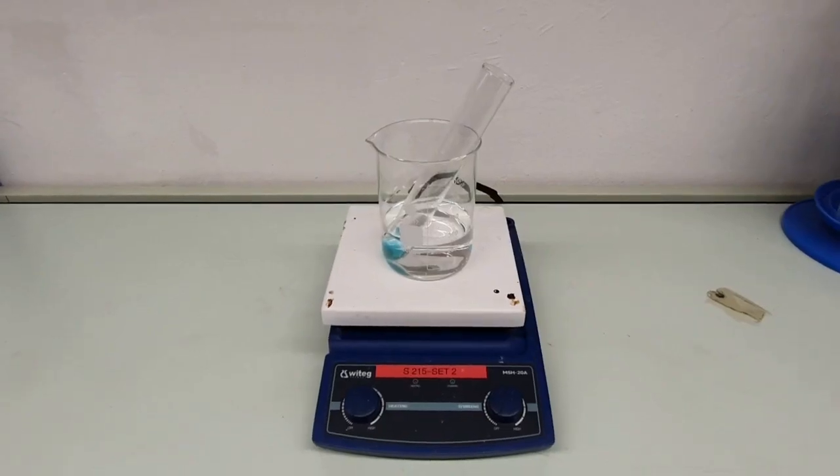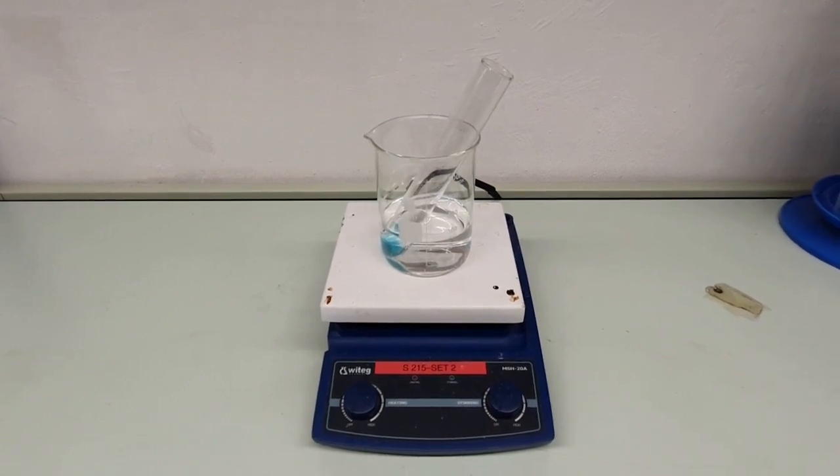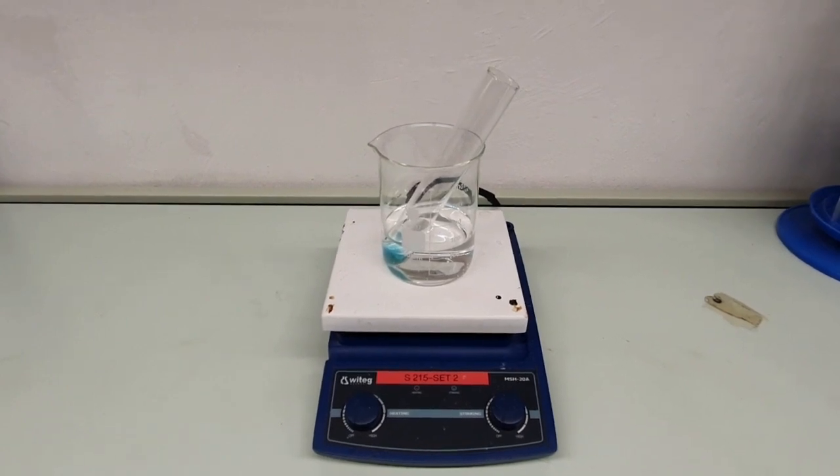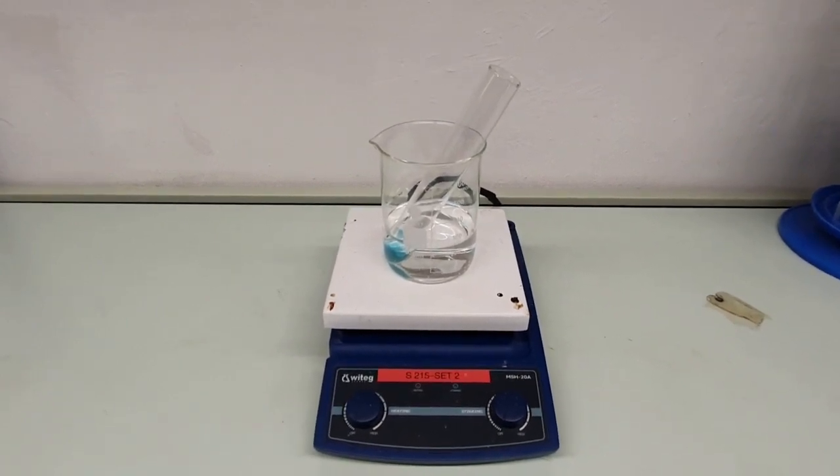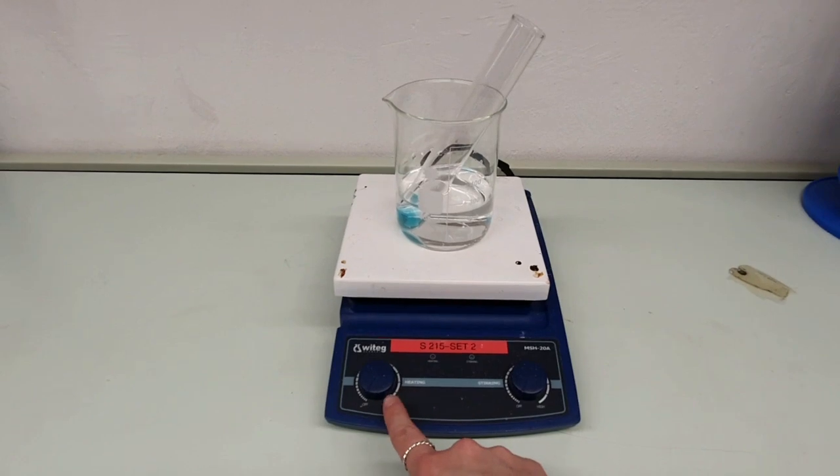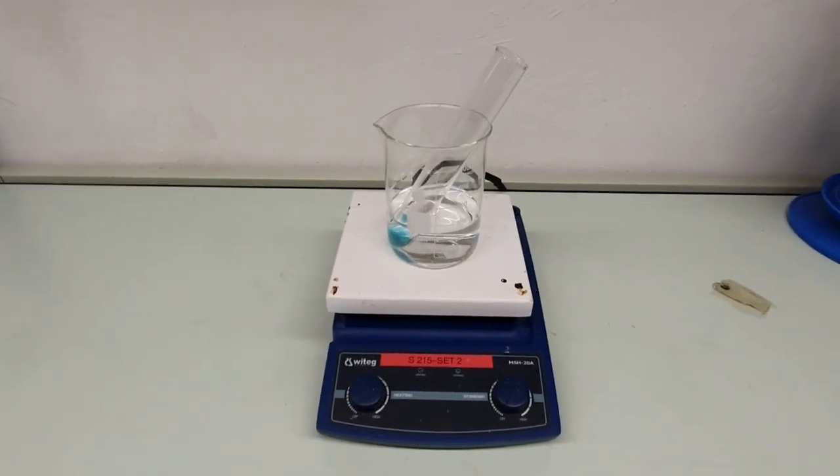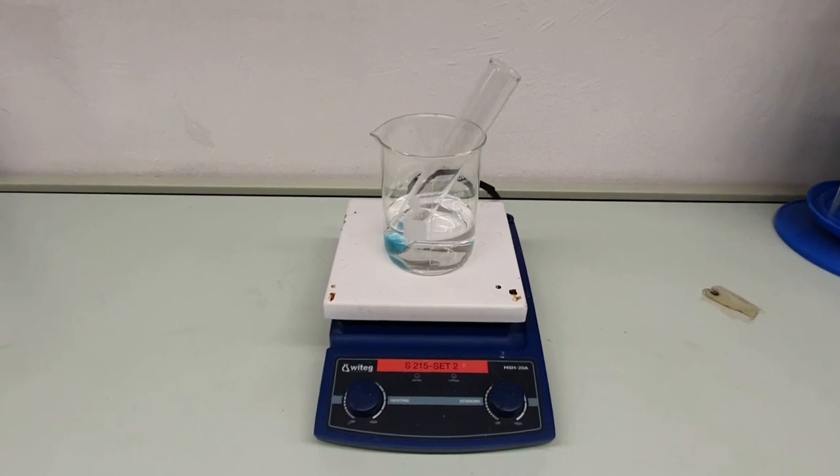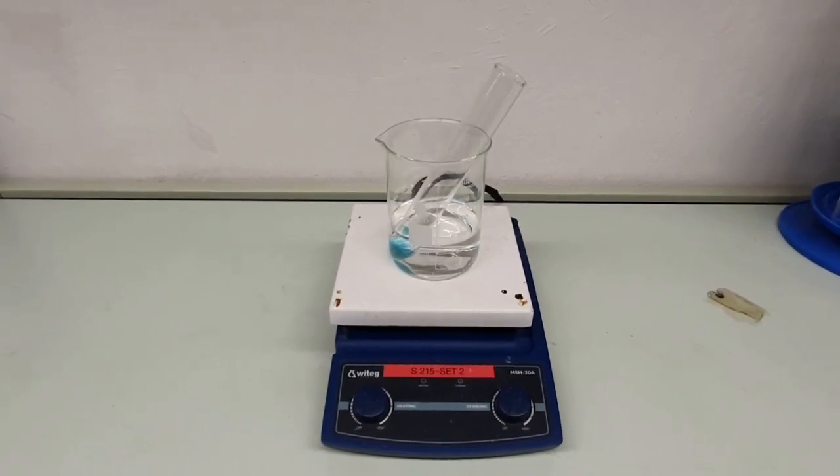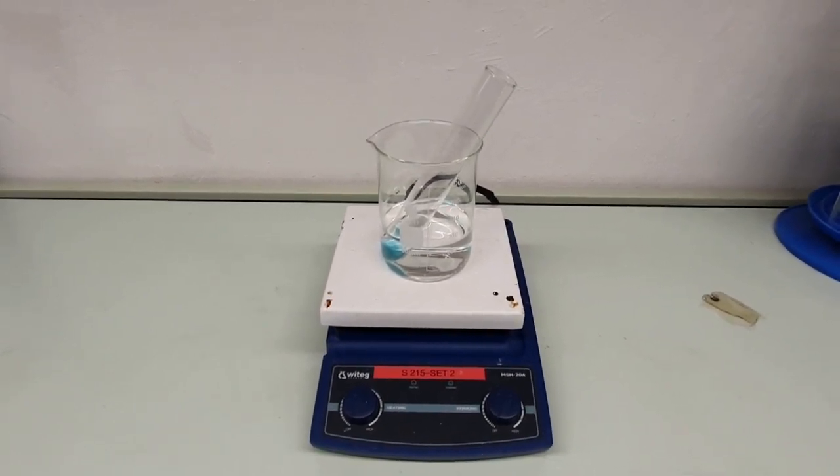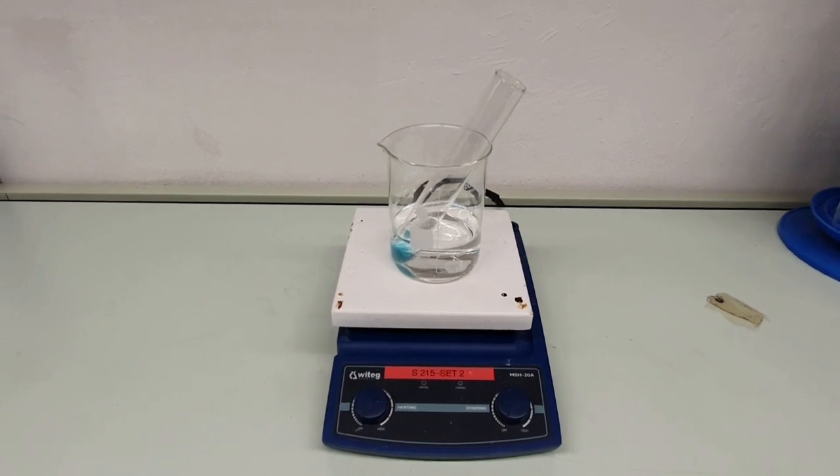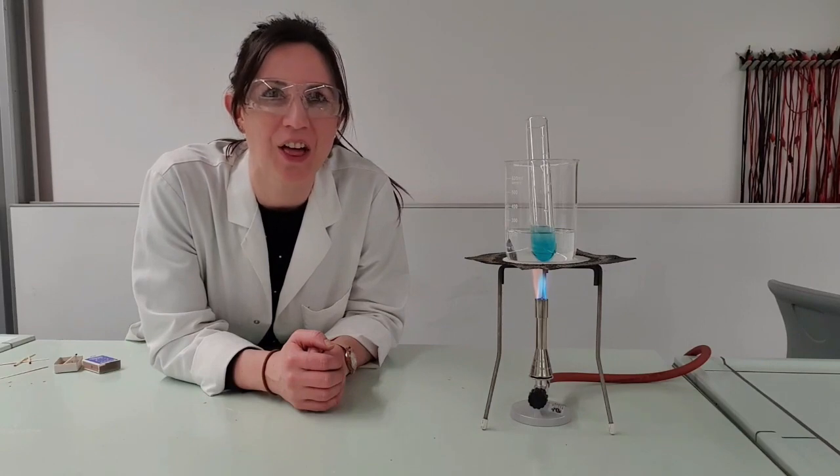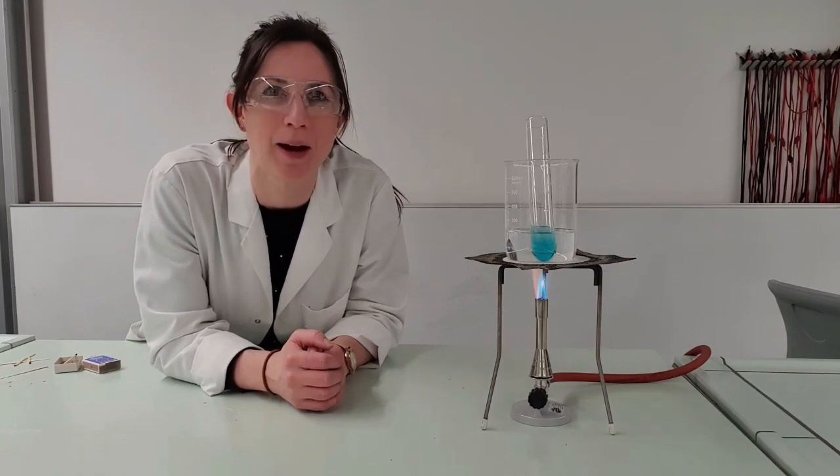And the third method to create a water bath would be to use a hot plate. So you just put your beaker on top of the hot plate, and this will keep it at a nice consistent temperature as you change the dials here. However, it's not as easy to control precisely as a digital water bath, so you might still get some fluctuations happen, just not as much as in a Bunsen burner method. So there you have it: three ways to set up a water bath.